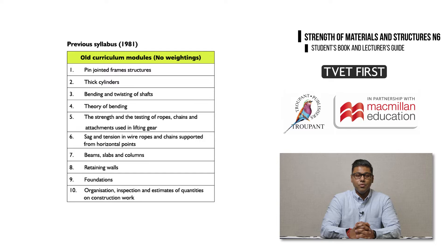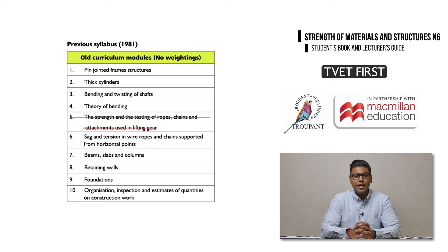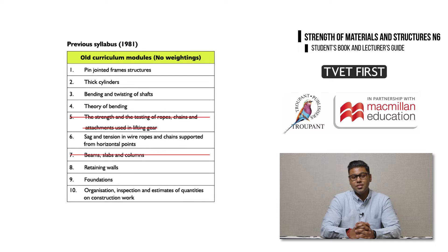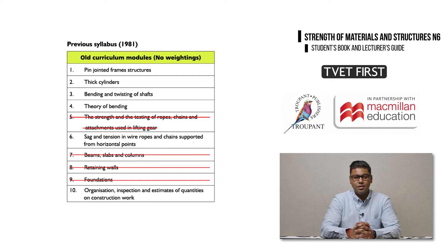Some content from the previous curriculum has been removed. Module 5, the Strength and Testing of Ropes, Chains and Attachments Used in Lifting Gear has been removed. All the modules relating to concrete are no longer included, namely Module 7, Beams, Slabs and Columns; Module 8, Retaining Walls; Module 9, Foundations; and Module 10, Estimating.